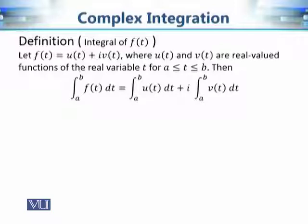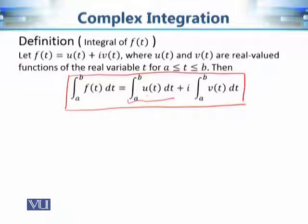If we have a function f of t which is a complex valued function, it has a real part and an imaginary part: u of t plus i·v of t, where v of t is the imaginary part. If we want to evaluate it from a to b, we simply evaluate the real part and imaginary part separately: integral of u of t dt from a to b, plus i times integral of v of t dt from a to b.